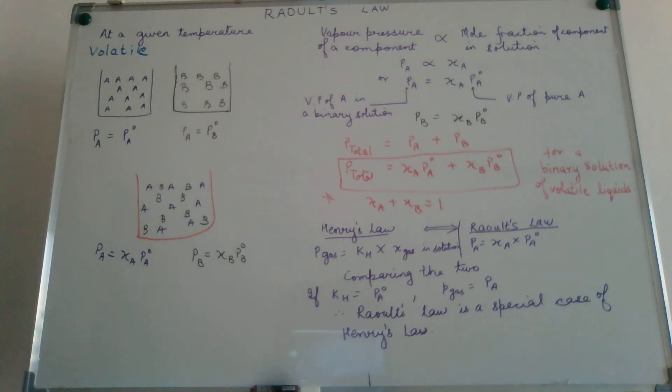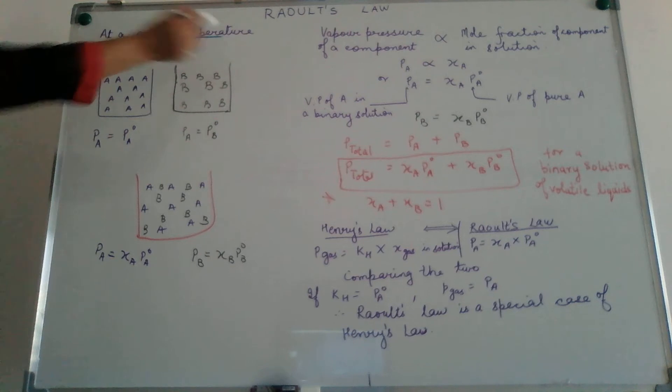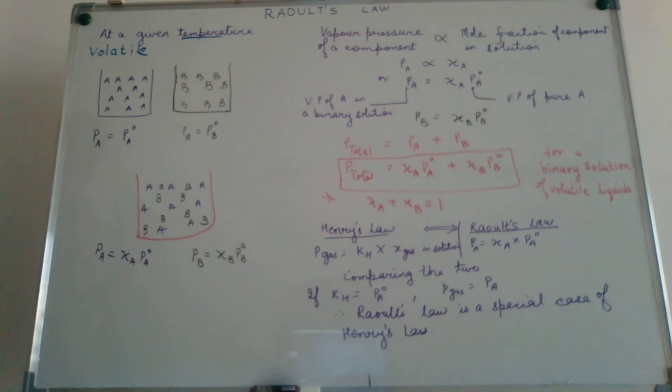Both the liquids are volatile. That means particles of both liquids can convert into the vapor state. We have seen earlier how pressure or vapor pressure is affected by temperature. So first thing is we shall talk about temperature being fixed.